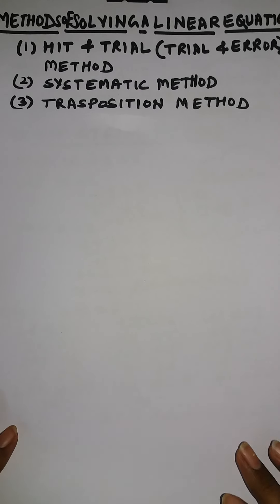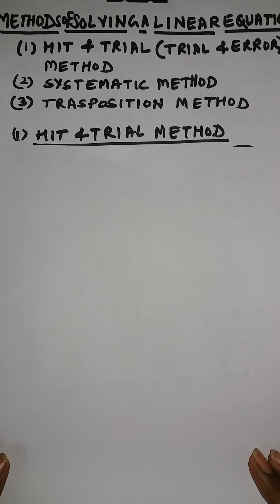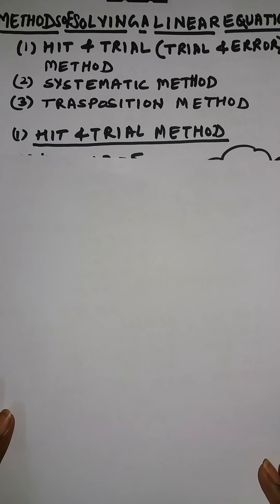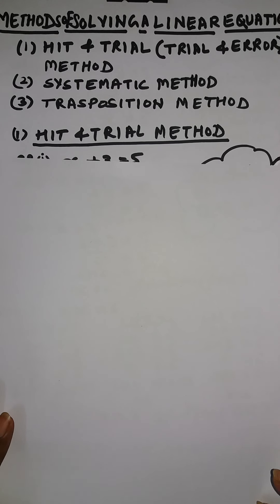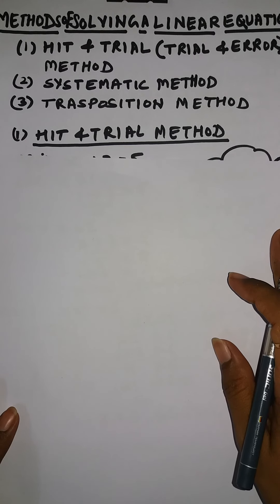Let us start with hit and trial method. Its other name is trial and error method. In this method, we substitute various values of a variable and stop only when the value satisfies the equation, that is, when LHS is equal to RHS.